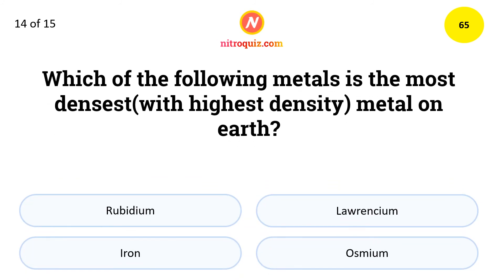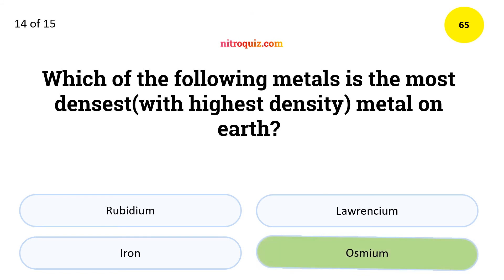Which of the following metals is the most densest metal on earth? The answer is osmium.